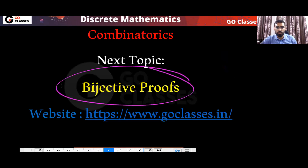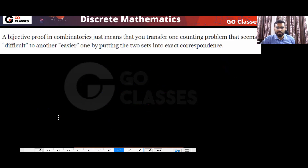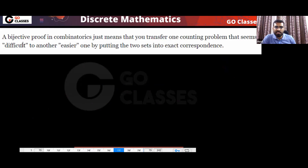Let's see what bijective proof is. This is very simple. Basically, sometimes in bijective proof, you have one counting problem that is difficult. Then you can convert that difficult counting problem into an easy counting problem by putting them into one-to-one correspondence.